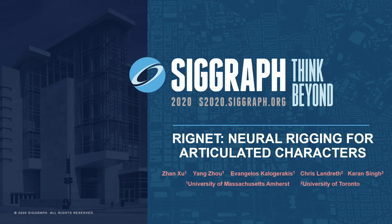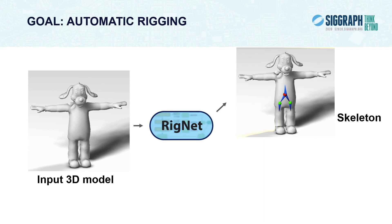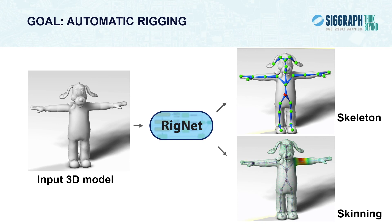Hi, I'm Zhang Xu from UMass Amherst and will present our method for automatically producing character rigs, called RigNet. Given an input mesh presenting a character, such as the humanoid puppy you see here, when it goes through our network RigNet, it first produces a skeleton tailored for its underlying articulation structure and geometry, and then produces a skinning weight vector per mesh vertex, indicating the degree of influence it receives from different bones.